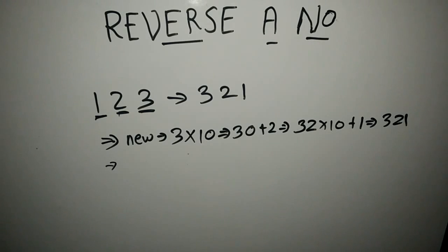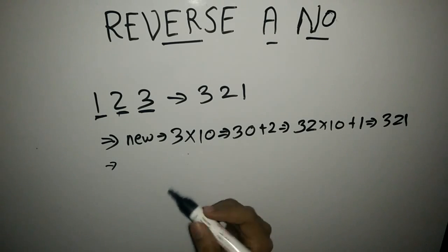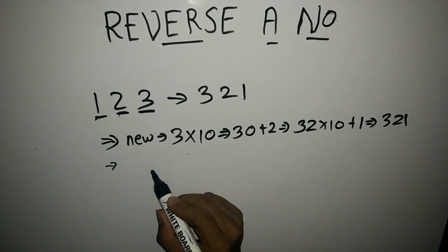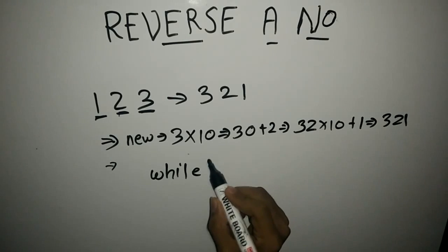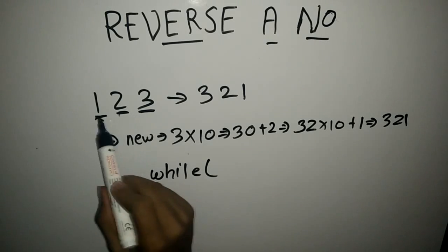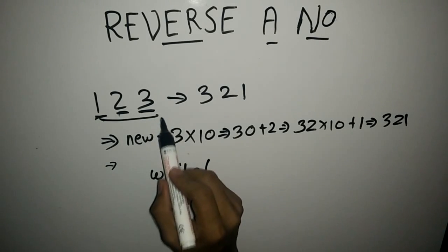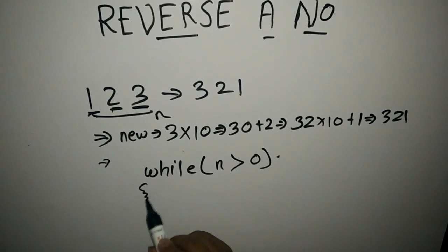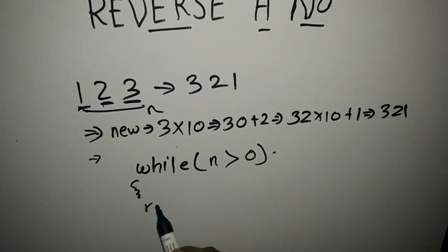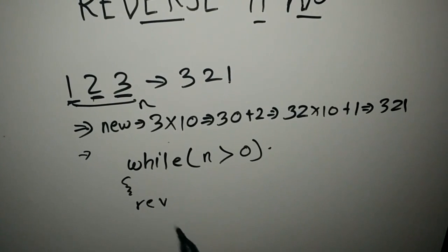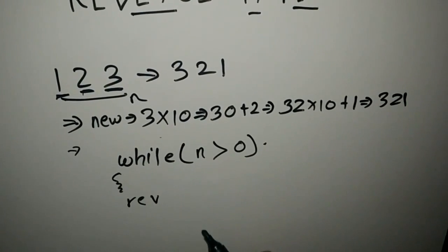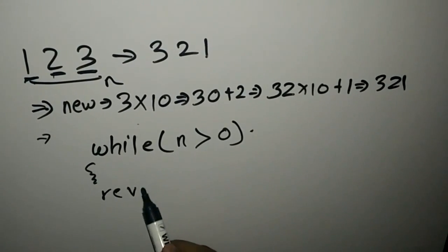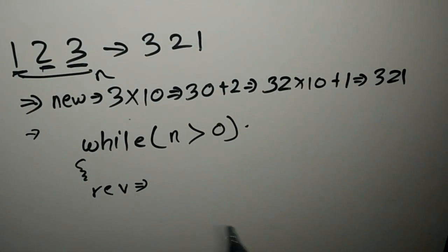Now how do we write this algorithm to reverse a number? The algorithm goes like this: while. If we store the number like 123 in a variable called n, so while n is greater than 0. Suppose this is a new variable called reverse, and we have to store our reversed number in it. Initialize reverse to 0.